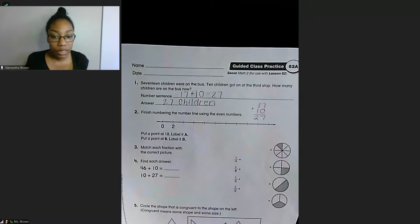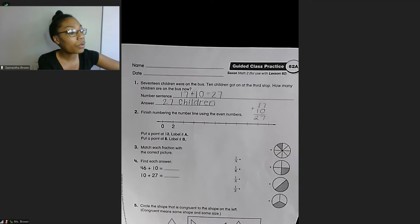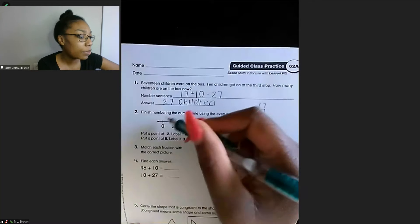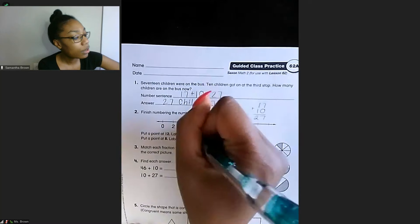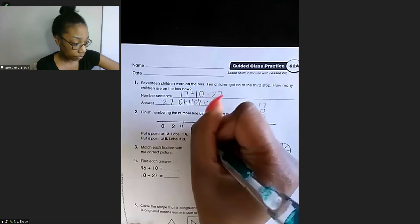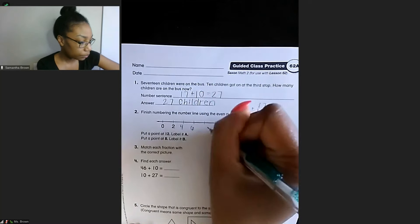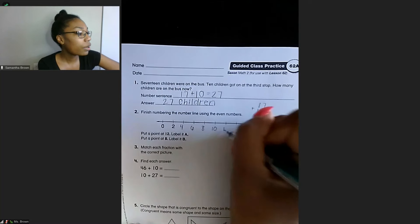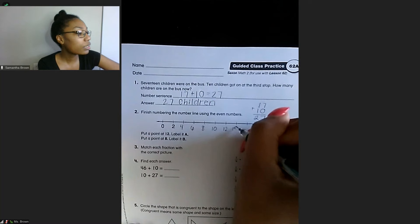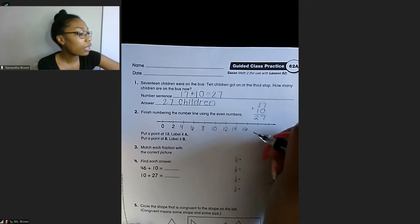Number 2 says finish numbering the number line using the even numbers. So I'm going to continue counting up. So we have 0, 2, 4, 6, 8, 10, 12, 14, 16, 18, 20.